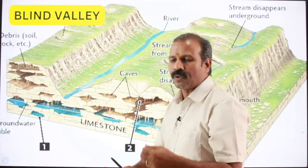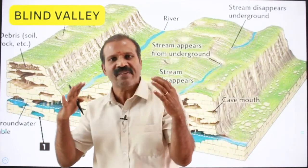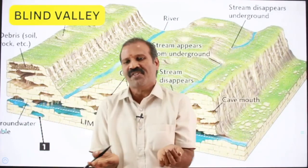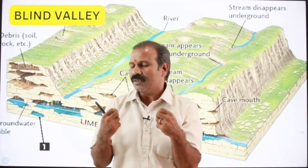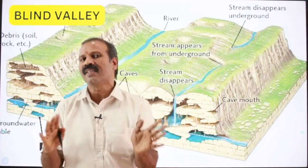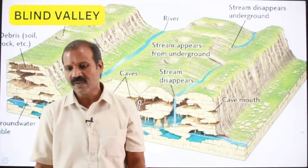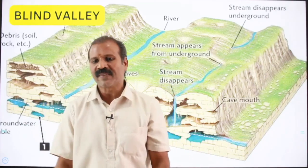This is the way we can find the karst topographical features. In any limestone topography, you can find such diversified features anywhere in the world. Thank you.